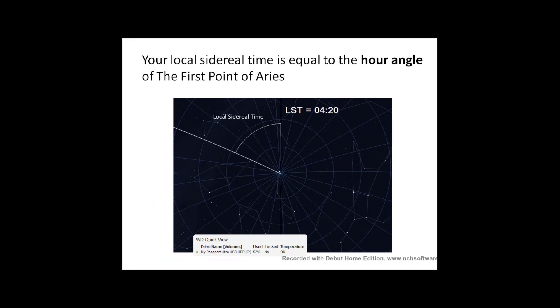Our local sidereal time is the hour angle of the first point of Aries. Basically, it's how far around it's gone in hours and minutes. I'm going to do another video about hour angles, the hour angles of stars, because I found it a little bit tricky. I'd like to talk a bit more about it. It took me a while to get my head around hour angles.